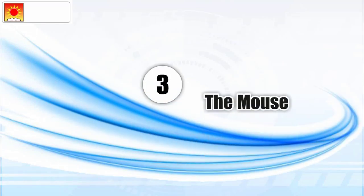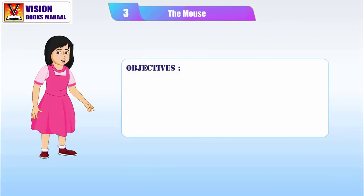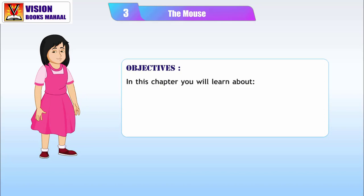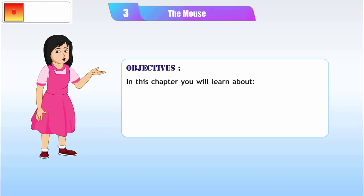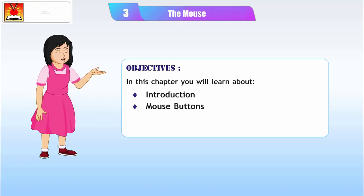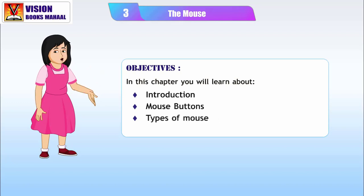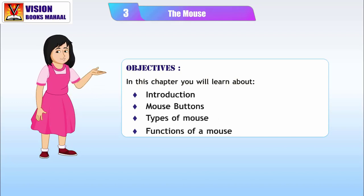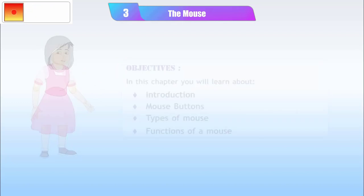Chapter 3: The Mouse. Objectives: In this chapter you will learn about the Introduction, Mouse Buttons, Types of Mouse, and Functions of a Mouse.